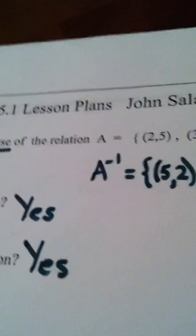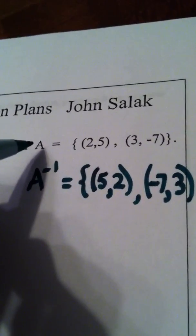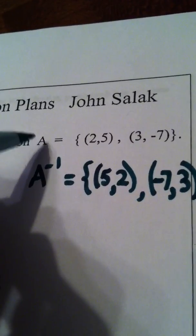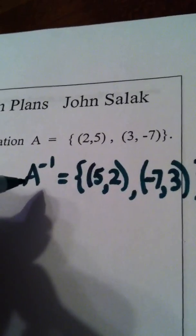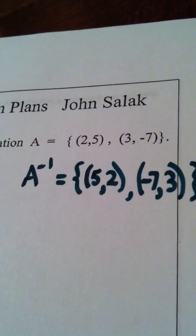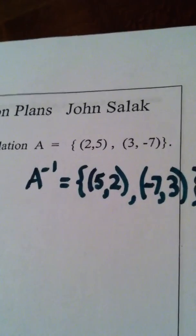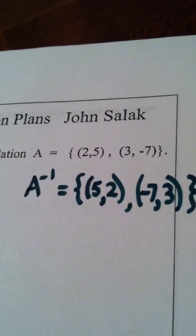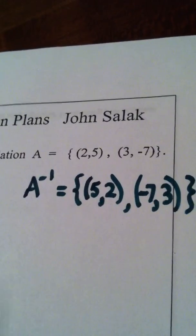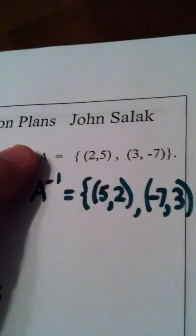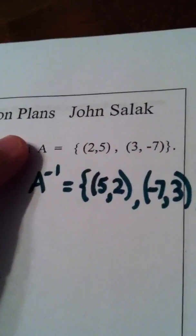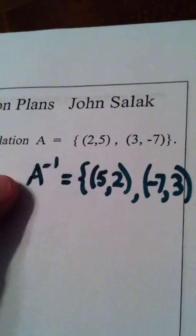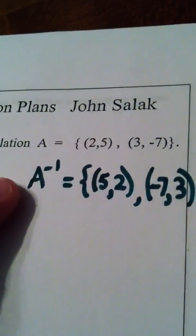So, here's what I've started with in this particular example. I started with a function whose inverse is also a function. Okay? And that happens sometimes. And in fact, that's the ideal situation. But basically here, we started with a function and the inverse also happened to be a function.